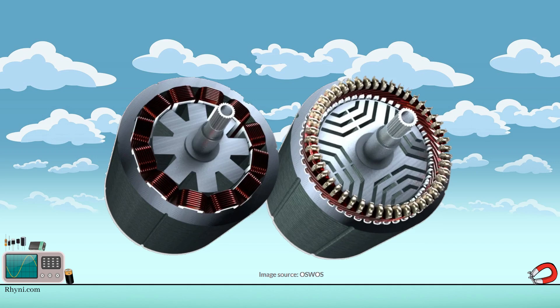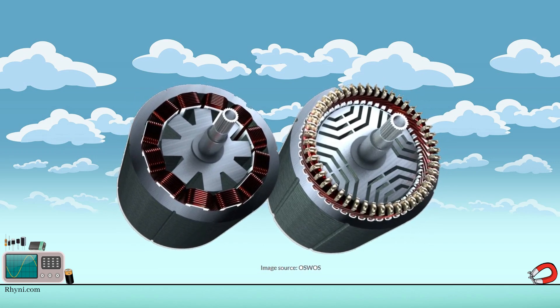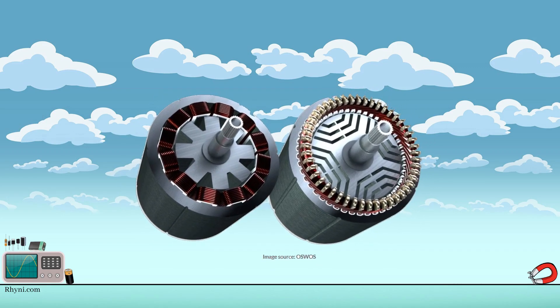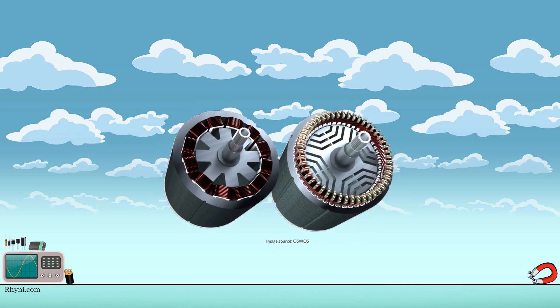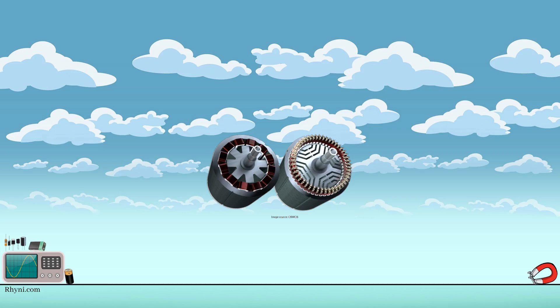In further note, SRM is the oldest electric motor developed in 1838 with mechanical phase switching arrangements. Whereas synchronous reluctance motor is the recent development. The first synchronous reluctance motor was developed in 1923.